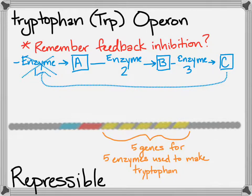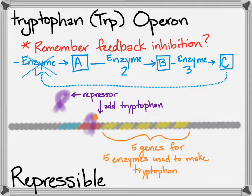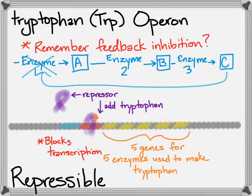The repressor is not bound to the operator by default. If tryptophan is added — if the enzymes are making lots and lots of tryptophan — tryptophan binds to the repressor molecule, and then that binds to the operator, blocking those genes from being produced because you have plenty of tryptophan in the cell already. So tryptophan production blocks transcription of tryptophan genes, making this a repressible operon.